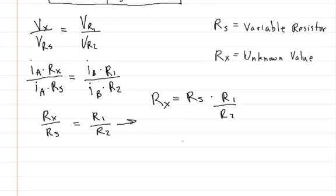Now, let's see. Rs is equal to 36 ohms. R1 is equal to 12 ohms. And R2 is equal to 108 ohms. And then we're going to divide that out.